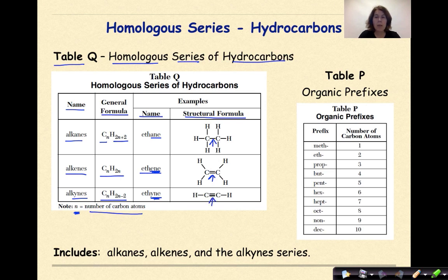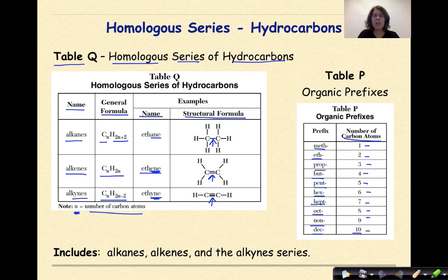Table P is also extremely helpful. This gives you the prefixes associated with number of carbon atoms: meth is 1, eth is 2, prop is 3, but is 4, pent is 5, hex is 6, hept is 7, oct is 8, non is 9, and dec is 10. We're not going to go past 10. You've seen these before with binary molecular compounds. The key ones to be familiar with are the first four: meth, eth, prop, and but. This is the starting point of naming our basic organic compounds.